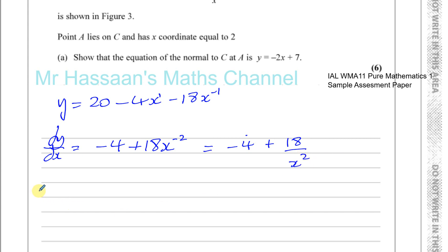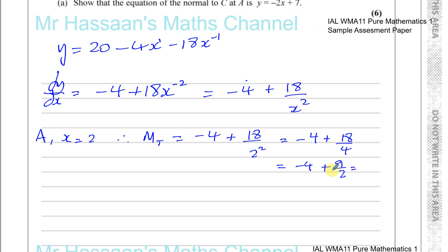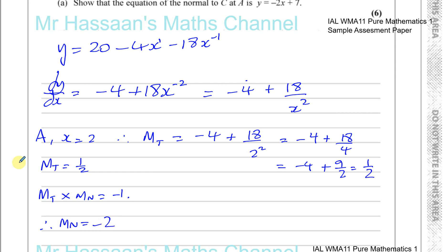At point A, x equals 2. Therefore the gradient of the tangent at A is minus 4 plus 18 over 2 squared, which gives minus 4 plus 18 over 4, which is minus 4 plus 9 over 2. That's minus 8 over 2 plus 9 over 2, which is one half. So the gradient of the tangent is positive one half. The gradient of the tangent times the gradient of the normal equals minus 1, so the gradient of the normal is the negative reciprocal, which is minus 2.